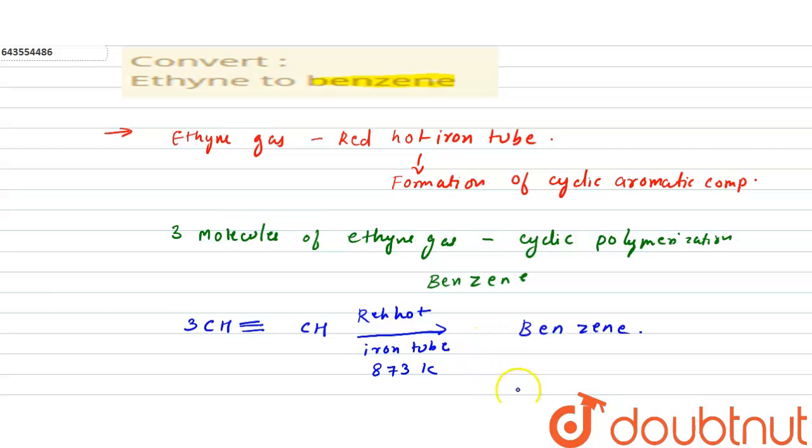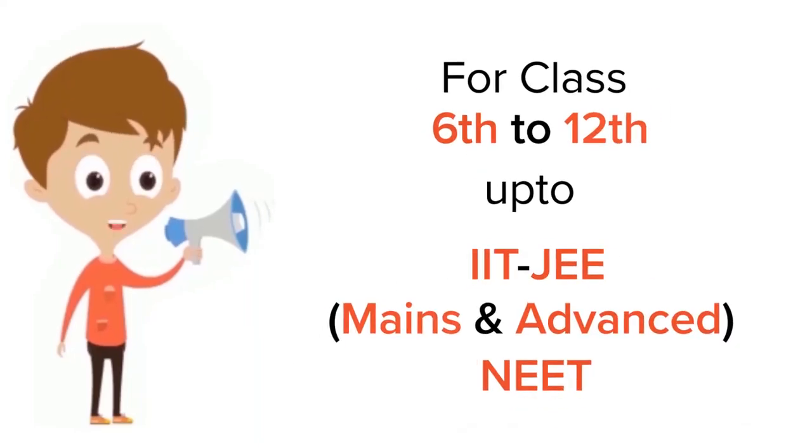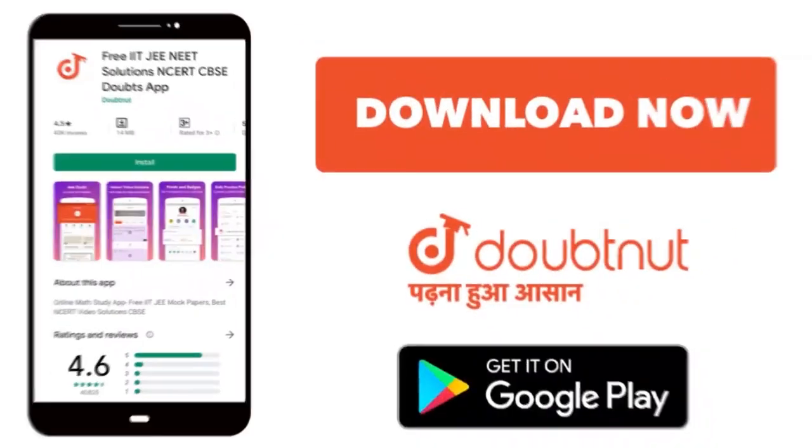For class 6 to 12, IIT-JEE and NEET level, trusted by more than 5 crore students. Download Doubtnet app today.